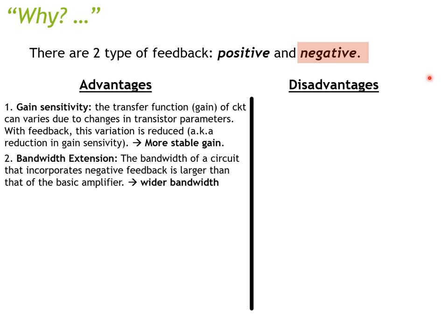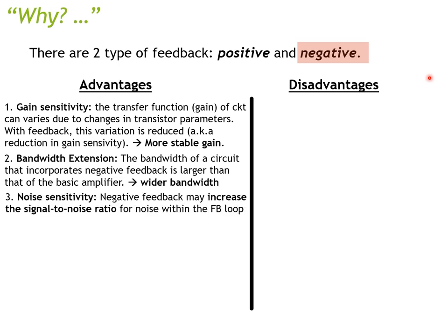The second advantage is bandwidth extension. The bandwidth of a feedback circuit is larger than its basic amplifier alone, so you can achieve a wider bandwidth. The third advantage is noise sensitivity — by incorporating feedback, you can actually increase the signal-to-noise ratio.